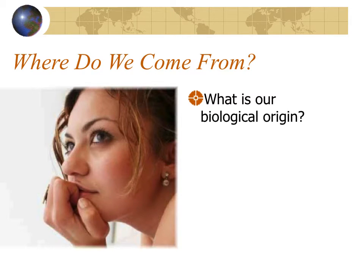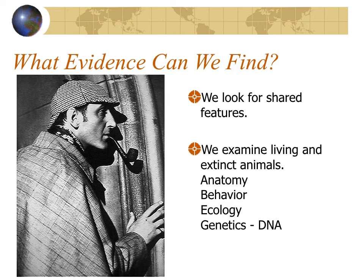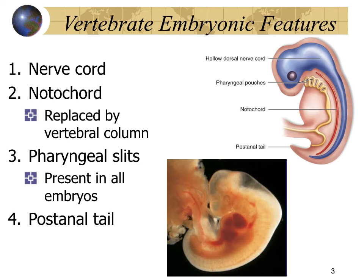This is our second of two PowerPoints on animal evolution, and this one is going to focus on human evolution, which was another topic that Darwin was very interested in. This is about the biological origin of human beings. In science we look for evidence — we can't turn the clock back, but we can look at shared features, examine living and extinct animals, anatomy, behavior, ecology, and genetics, to place humans within the animal kingdom.